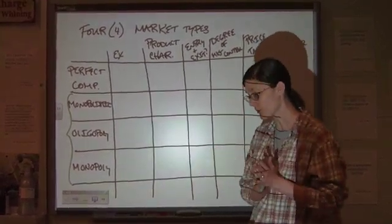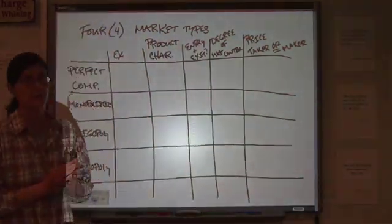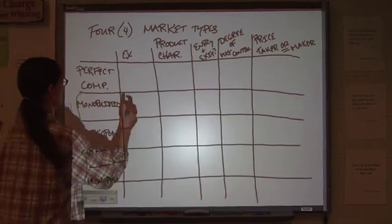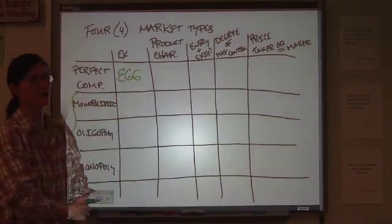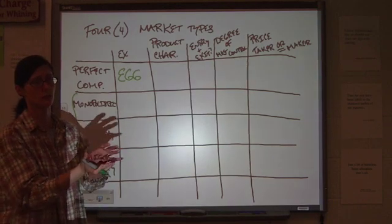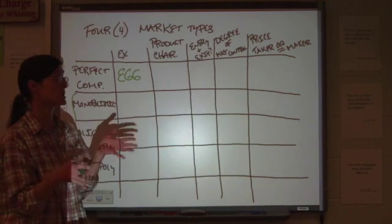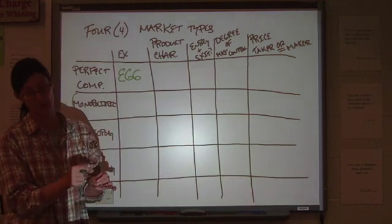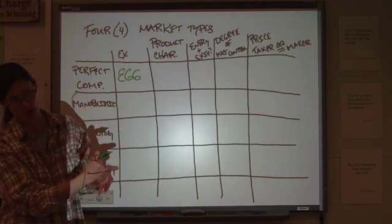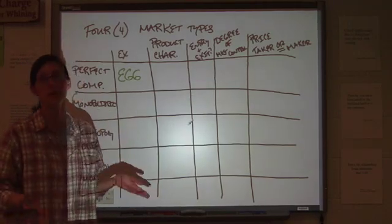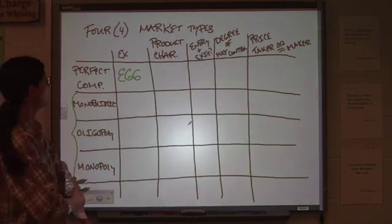All right, so for perfect competition, my example is an egg. Just your average run-of-the-mill jumbo white grocery store egg. It's in a package. It doesn't tell you with individual eggs whose farm they came from. They're not branded, you know, Farmer Ted's Egg here. It doesn't make any difference. It's just egg.